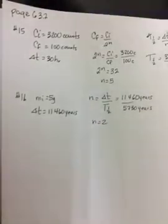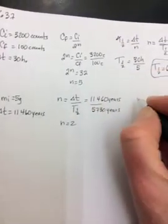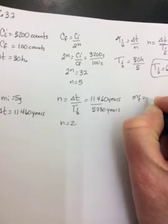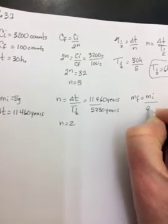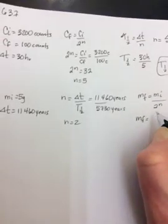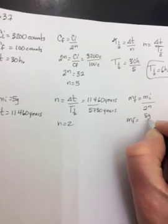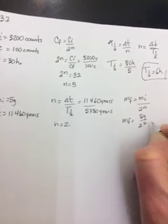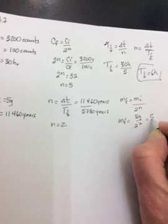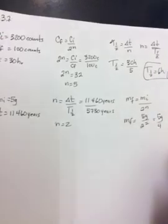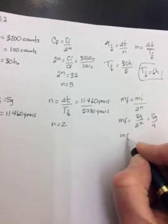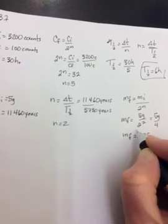So you have two half-lives, so you can now find your final mass. So M final is equal to M initial over 2 to the N. So this part of the question is just your normal, so 5 grams over 2 to the 2, so 5 grams over 4, so you get a final mass of 1.25 grams.